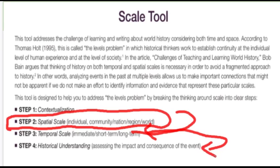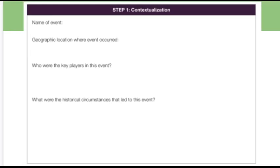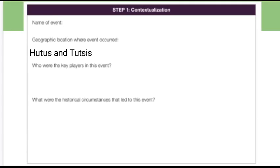Understand we're talking about something very tough and very horrible — there's going to be a lot of impact and consequences. We're probably not going to get to step four in this series of videos. That contextualization — which is what was going on in the event, the Rwanda genocide — includes the geographic location where it occurred, which is Rwanda. The key players are the Hutus and the Tutsis, and we need some background on the historical hatred between the two groups, how one group came to kill the other. That's part of the historic circumstances. But that is not our focus right now.